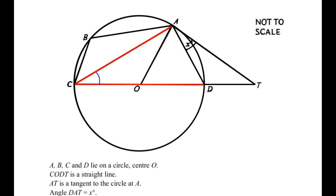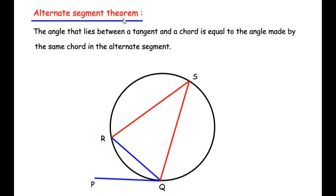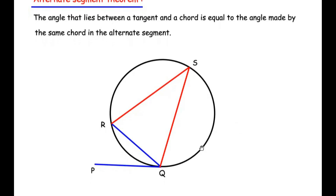To find angle A, C, D we are going to make use of another circle theorem which is the alternate segment theorem. It states that the angle between a tangent and a chord is equal to the angle made by the same chord but in the alternate segment. In the diagram, tangent PQ and chord RQ divide the circle into a minor segment and a major segment. If the tangent and chord make angle x, then the same chord makes angle x in the alternate segment.